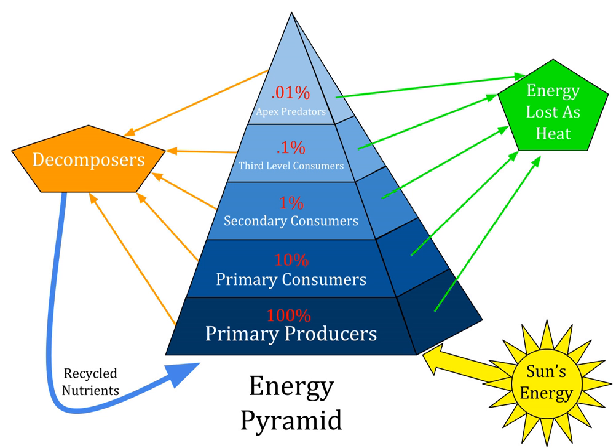The disadvantages of the pyramid of productivity as a representation: the rate of biomass production of an organism is required, which involves measuring growth and reproduction through time. There is still the difficulty of assigning organisms to a specific trophic level, as well as the problem of assigning decomposers and detritivores to a particular trophic level. Nonetheless, productivity pyramids usually provide more insight into an ecological community when the necessary information is available.